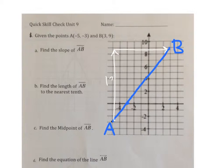Segment AB is going up from left to right, up 12 units and over 8. And that's how we figure out the slope. The slope is up 12 over 8, which can be reduced to 3 over 2 as a final answer.